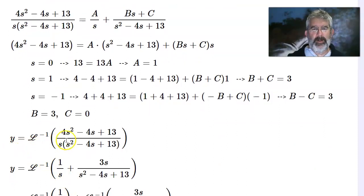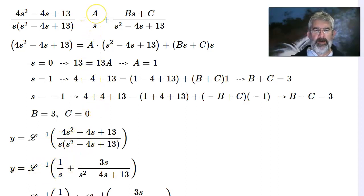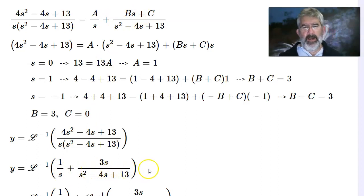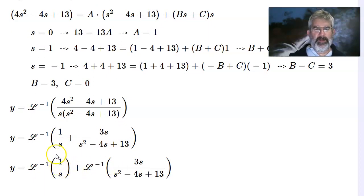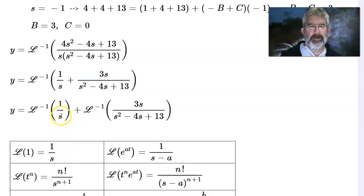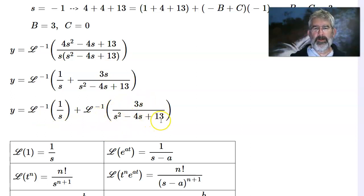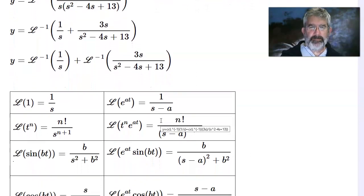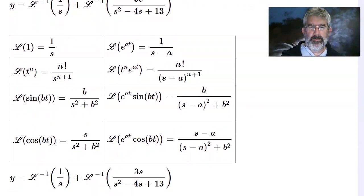So y is the inverse Laplace transform of this thing. A was 1, B is 3, and C is 0. So this sum of two fractions turns into this sum of two fractions. I can split that into two inverse Laplace transforms because the inverse Laplace transform is a linear operator and distributes over addition. This first one I recognize — this is the Laplace transform of 1, so the inverse Laplace transform would just be 1. And there's a question of what the heck am I going to do with the rest of this. Coming down here, this is just the same thing rewritten.